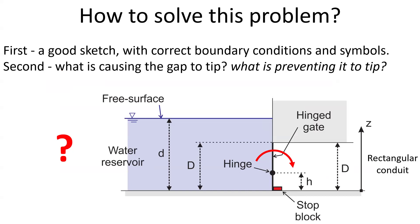The next step is to understand what is causing the gate to tip, and conversely, what is preventing the gate to tip. And the answer is related to the pressure of water acting on the gate.